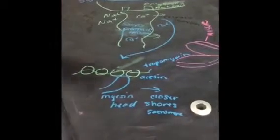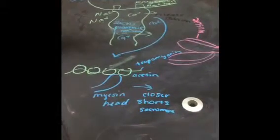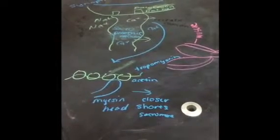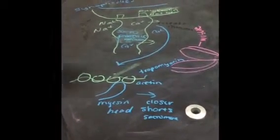The calcium causes the myosin head to move the tropomyosin out of the way, which shortens the sarcomere. As you can see,